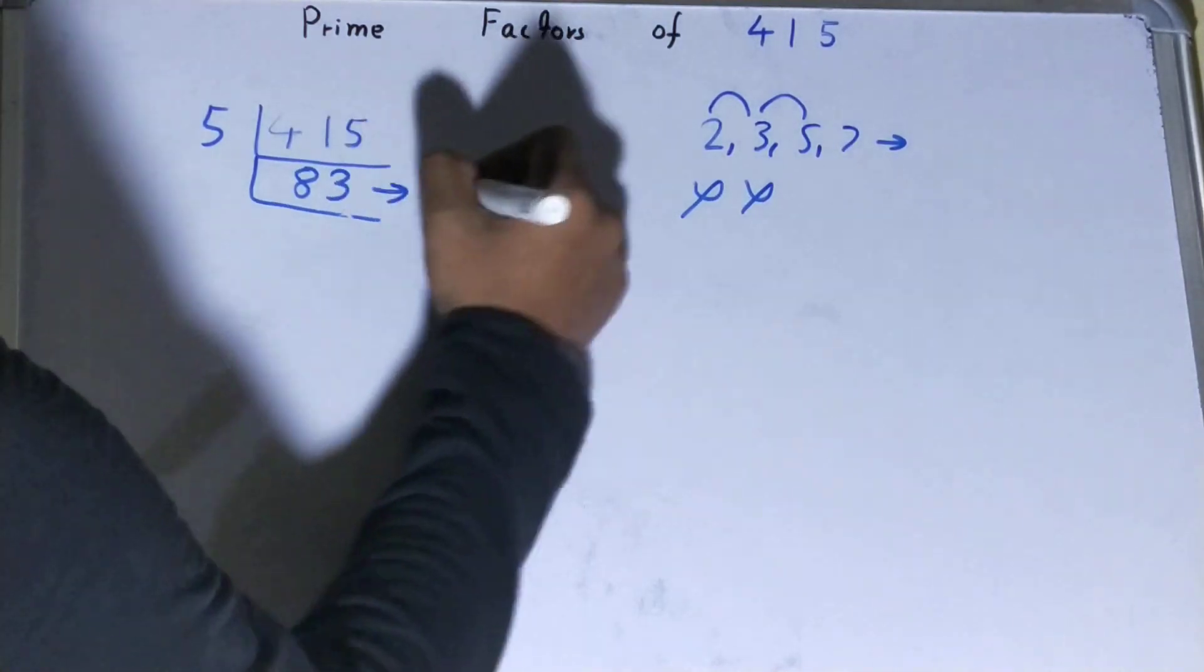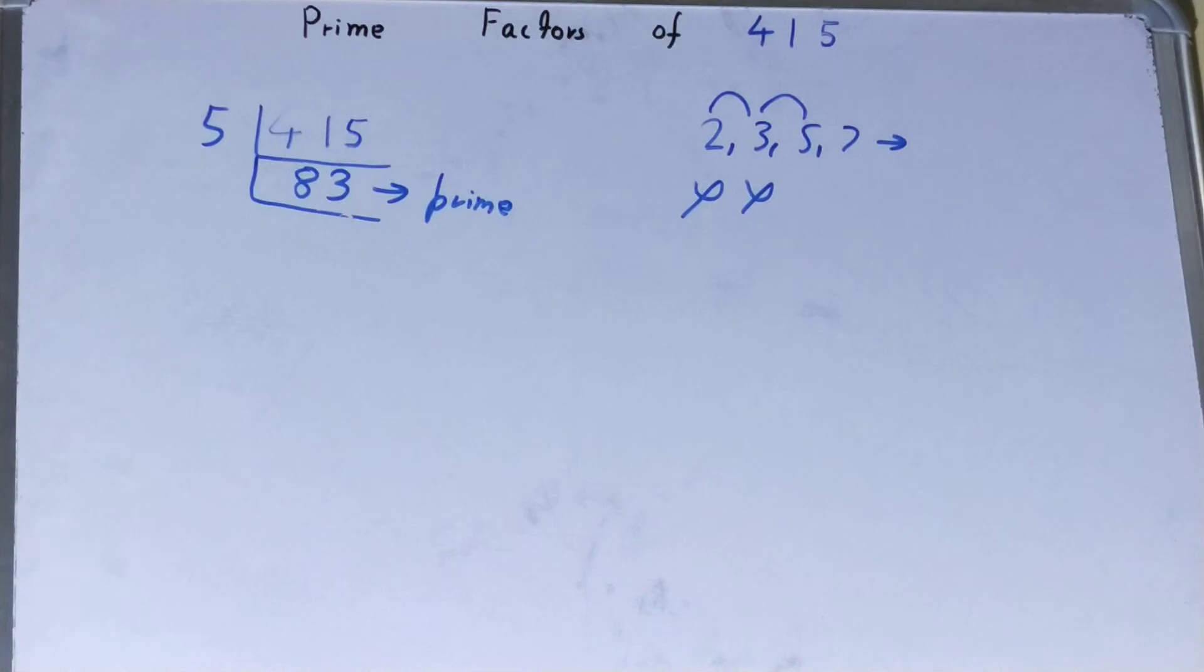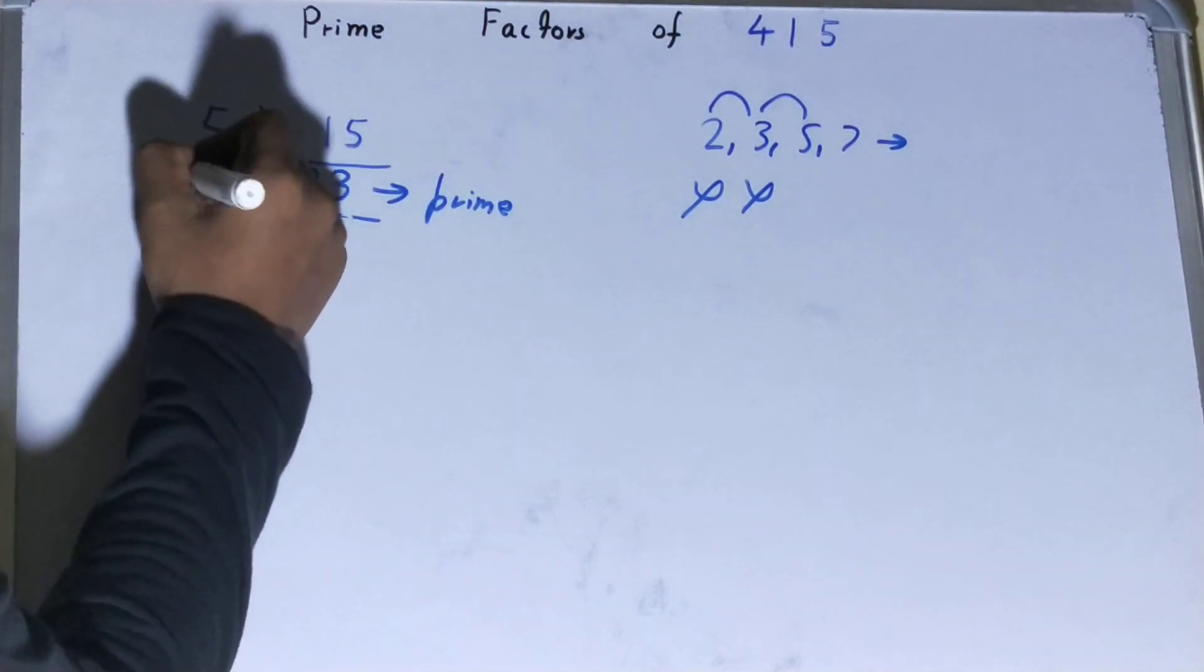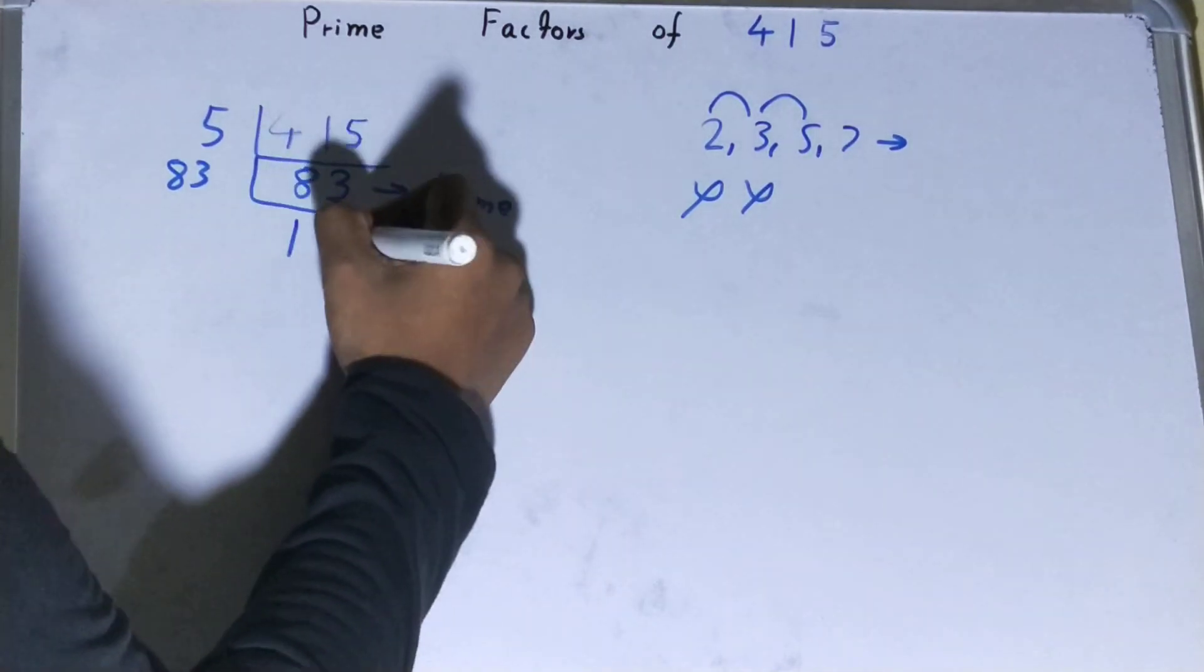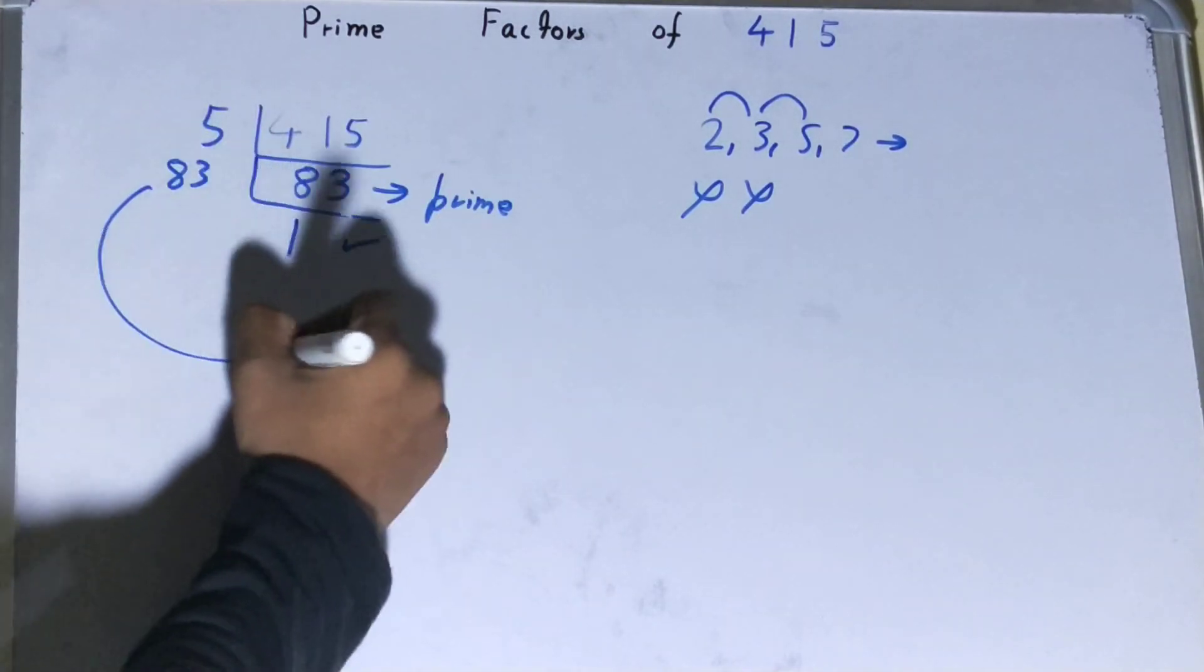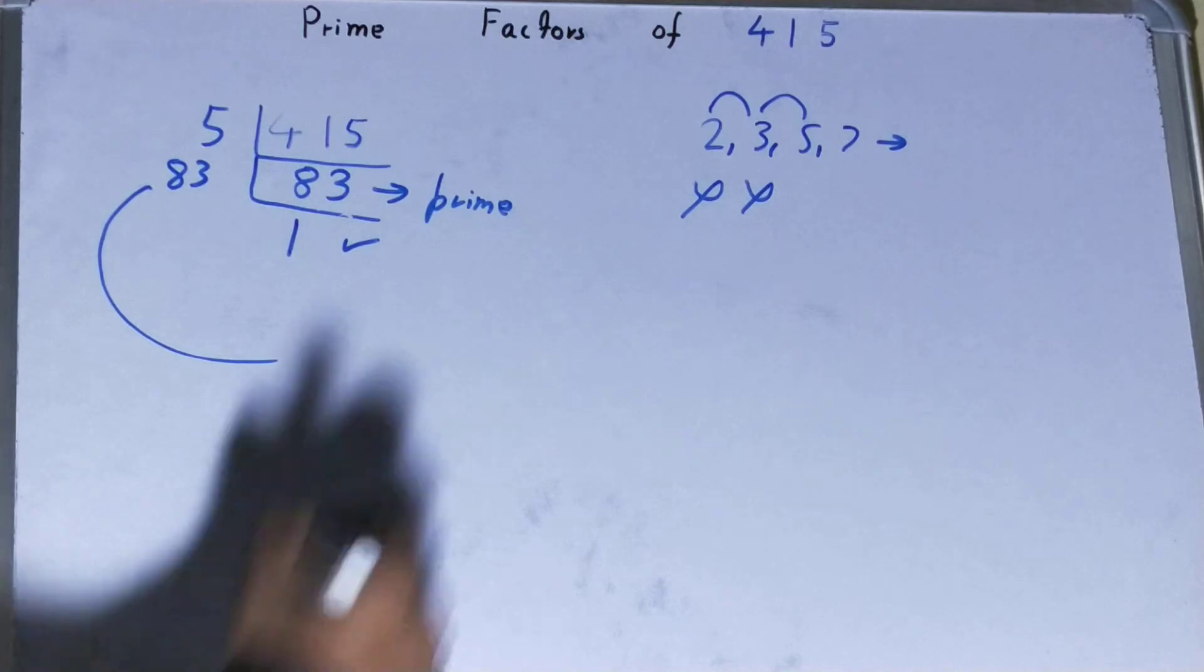Other than itself. So to divide this 83, you need 83 on the left-hand side. When you do so, you'll be left with 1. Once you're left with 1, the work is done, and whatever you have on the left-hand side will be the set of prime factors for the number 415, that is 5 cross 83.